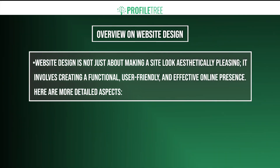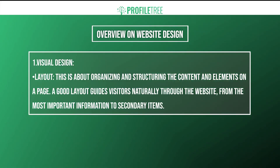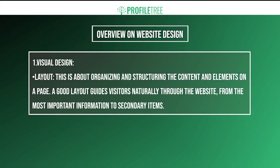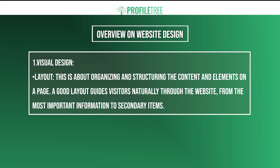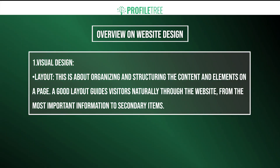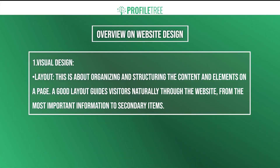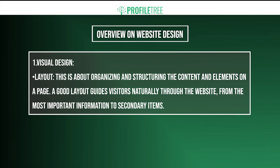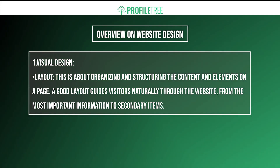So what exactly are the different aspects of website design? Number one is the visual design. First, you have the layout — this is about organizing and structuring the content and elements on a page. A good layout guides visitors naturally through the website, from the most important information to secondary items. Initially, what you'd want on the landing page or home page is information about your company. We'll use our Profile Tree website as an example.